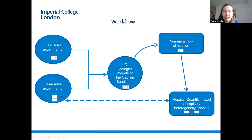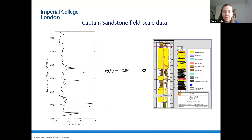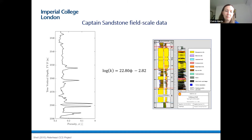Along with core-scale experimental data, I also used field-scale data to build my models. Due to its potential as a target UK storage site, there's lots of publicly available information online regarding the Captain Sandstone. To create these 1D field-scale models, I used porosity variations over a depth of 65 metres derived from shell-neutron wireline log data, and the porosity-permeability relationship based on RCAL measurements made at in-situ conditions.